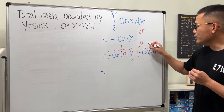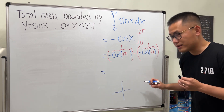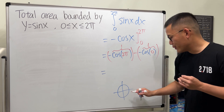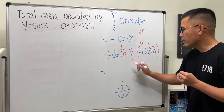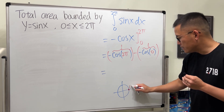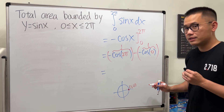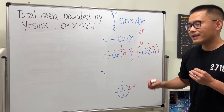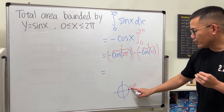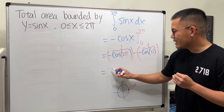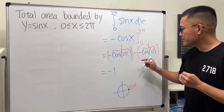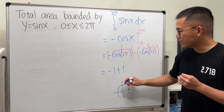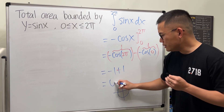Cosine of 2π equals one, and similarly cosine of zero also equals one. If you look at the unit circle, cosine is the x-value. At 2π, the x-coordinate is one; at zero, it's also one. So we get negative one, minus negative one becomes plus one: negative one plus one equals zero.